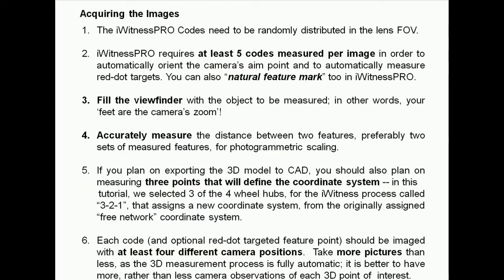Acquiring the images: the Eyewitness Pro codes need to be randomly distributed in the lens field of view. Eyewitness Pro requires at least five codes measured per image in order to automatically orient the camera's aim point and to automatically measure red dot targets. You can also use natural feature marks in Eyewitness Pro. Fill the viewfinder with the object to be measured — in other words, your feet are the camera's zoom.